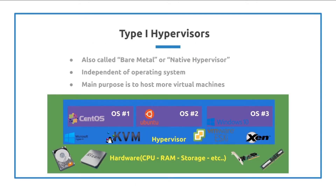Type 1 hypervisors are also called bare metal or native hypervisors, and these offer much better performance because there are only three layers to the design instead of the four layers that type 2 hypervisors have. Type 1 hypervisors are also independent of the operating system, and their main purpose is to host multiple virtual machines at once.